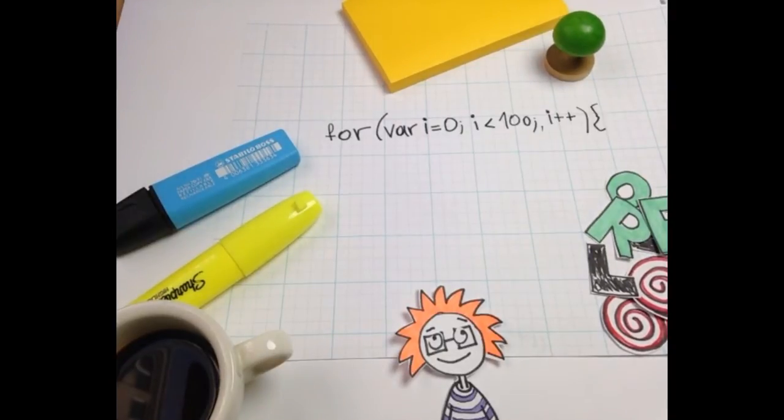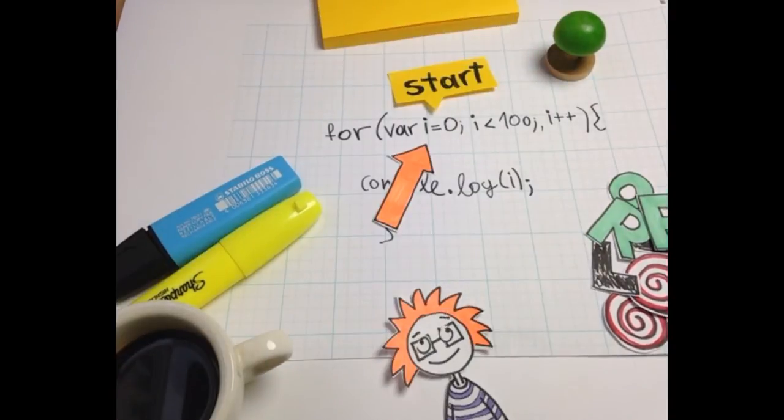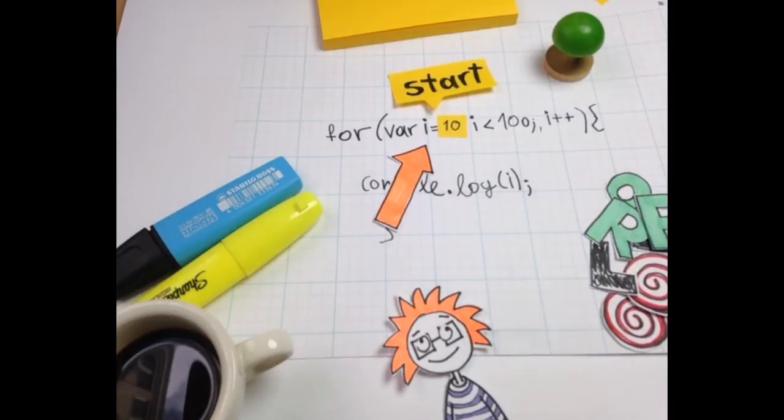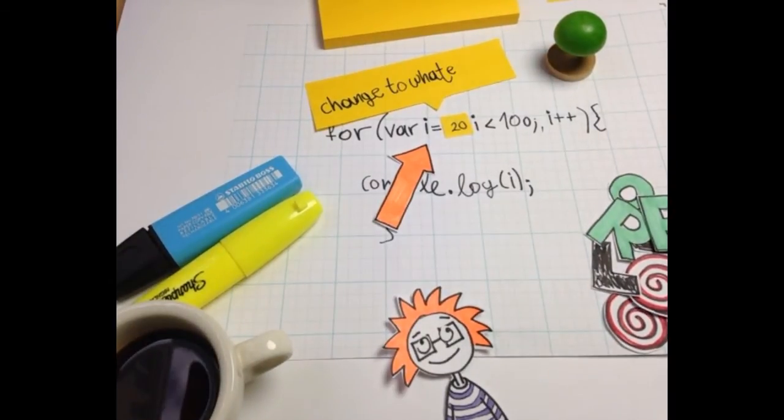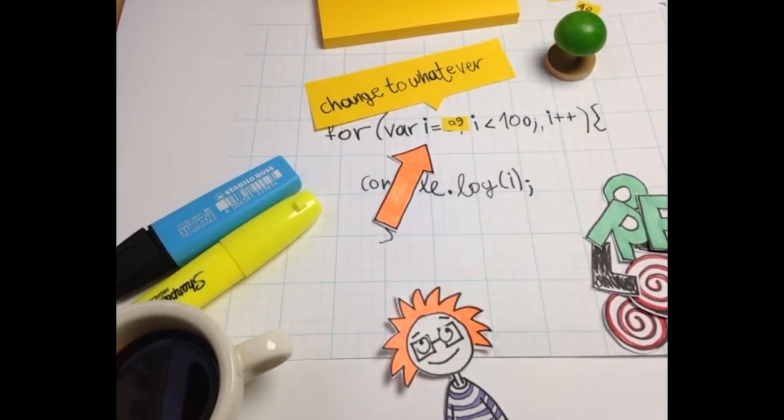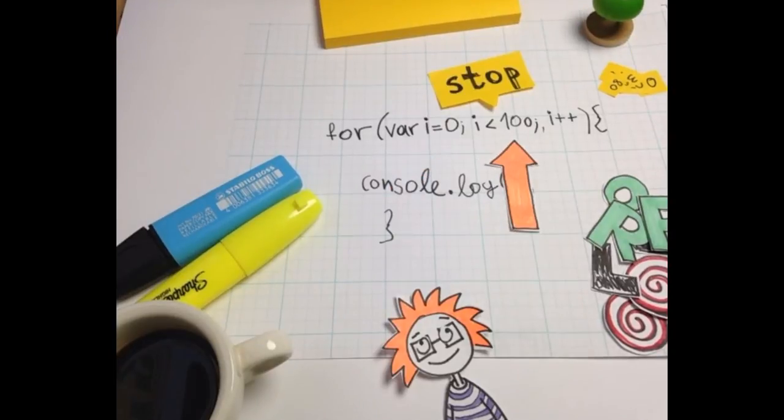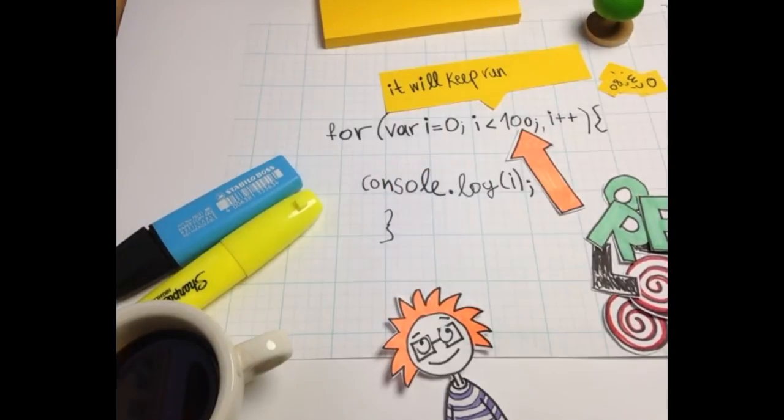Let's take the for loop apart. Variable i equals 0 tells the loop where to start. We could change that to whatever we want to. Then i is smaller than 100 tells the computer where to stop the loop. So it will keep running until that point.